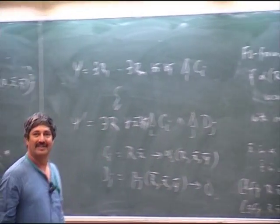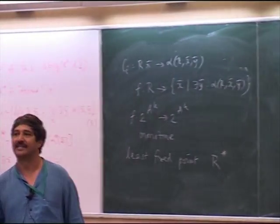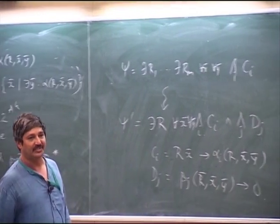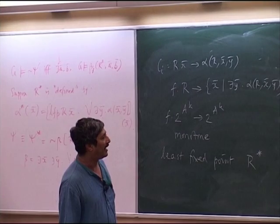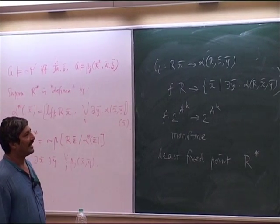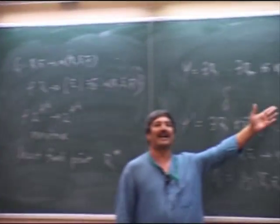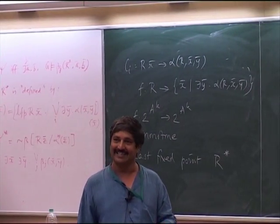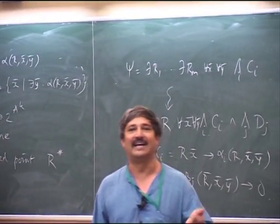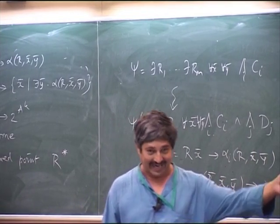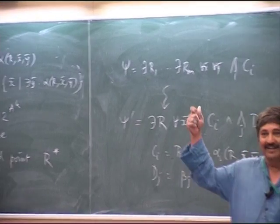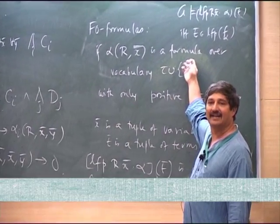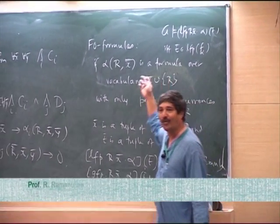You are using the fact that these occurrences are positive — only positive occurrences of R — that is what you use to show it is monotone. This suggests: if you have a class of ordered structures which is in P, that means a deterministic polynomial time Turing machine can accept or reject. For such structures, you can give an equivalent sentence in LFP logic.